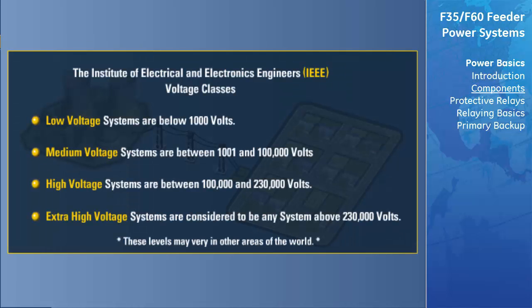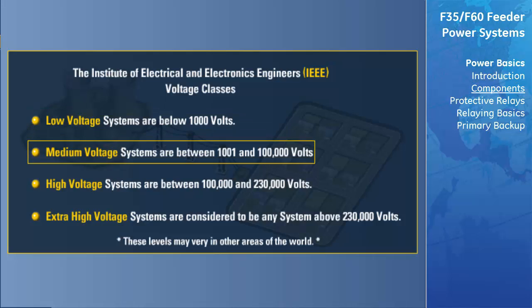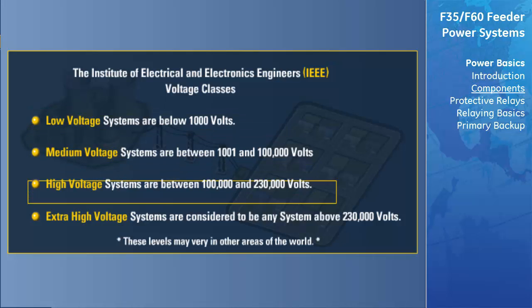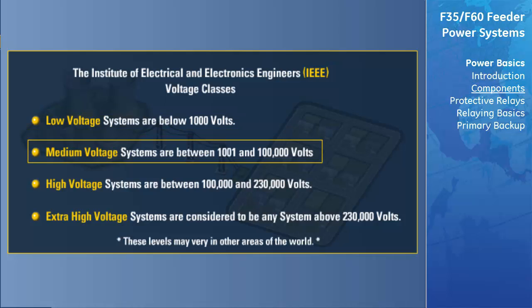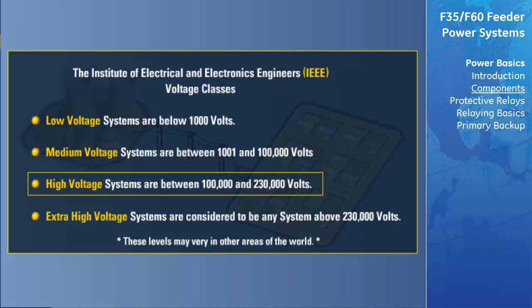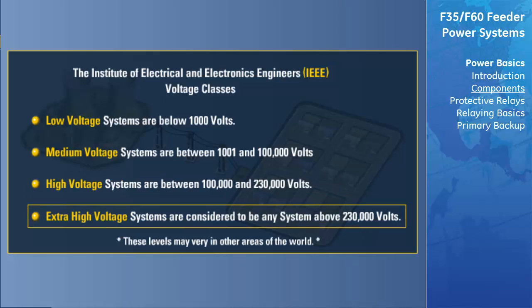The Institute of Electrical and Electronics Engineers, sometimes referred to as the IEEE, have divided voltage systems into low, medium, high voltage, and extra-high classes. Low voltage systems are below 1,000 volts; medium voltage systems are between 1,001 and 100,000 volts; high voltage systems are between 100,000 and 230,000 volts; and extra-high voltage systems are any system above 230,000 volts.